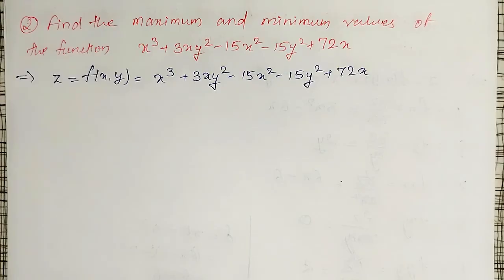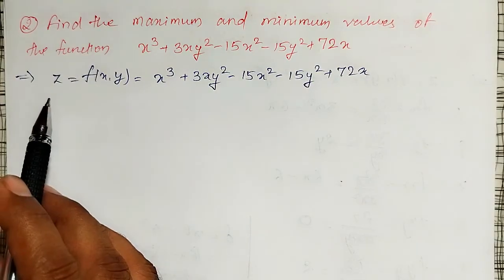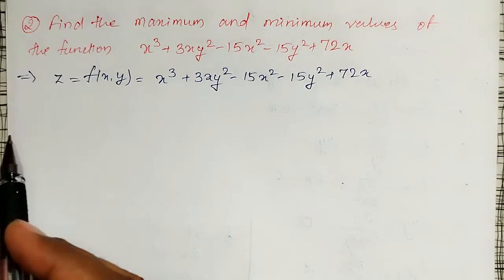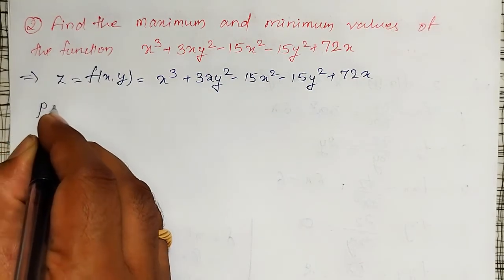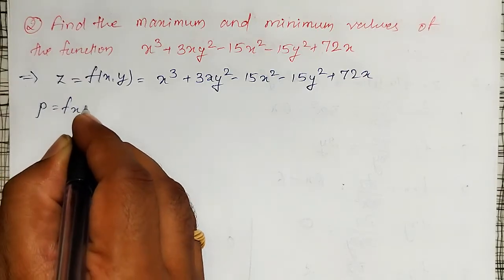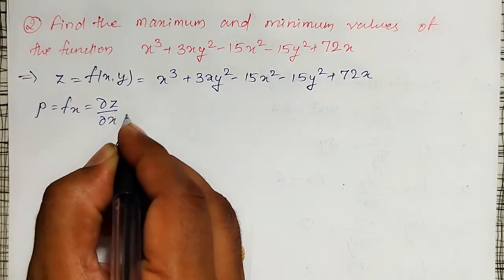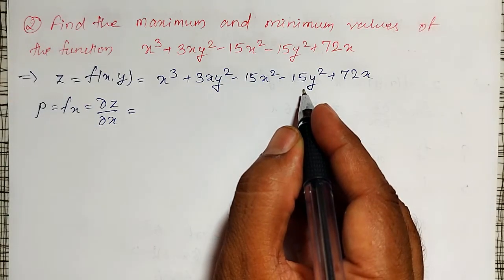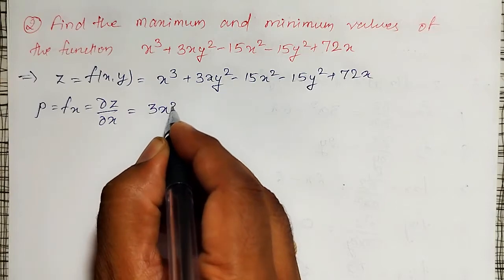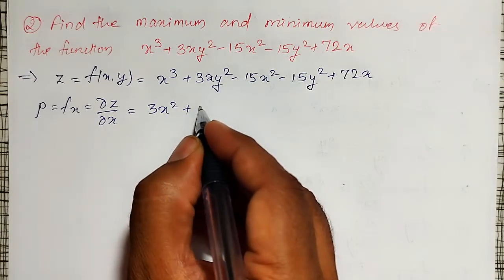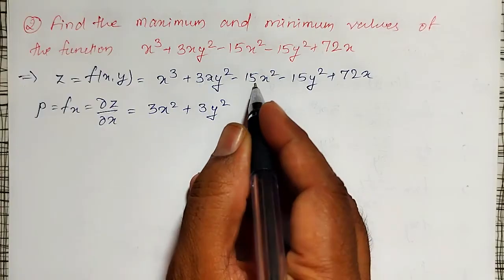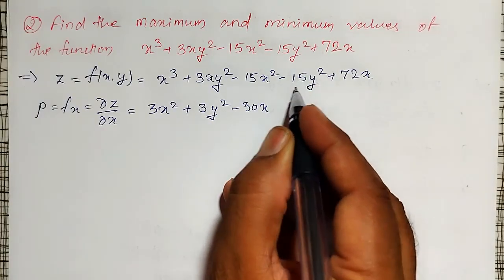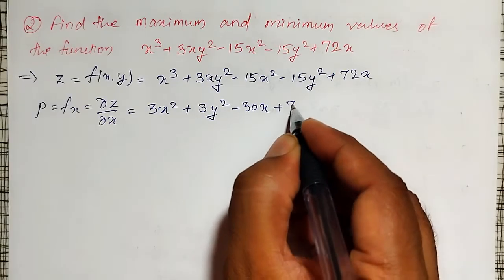For our convenience, let me first find all five partial derivatives of z up to second-order partial derivatives. The first one, let me call it p = fx = ∂z/∂x. The partial derivative with respect to x is: 3x² + 3y² - 30x + 72.